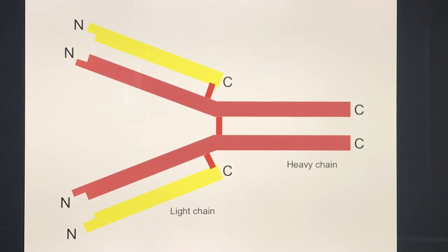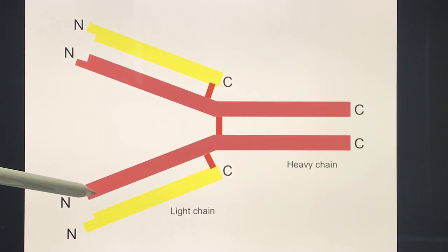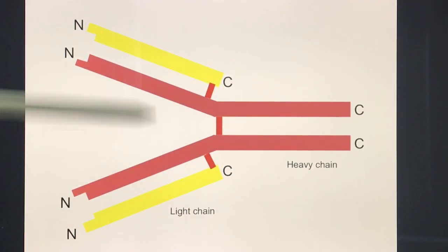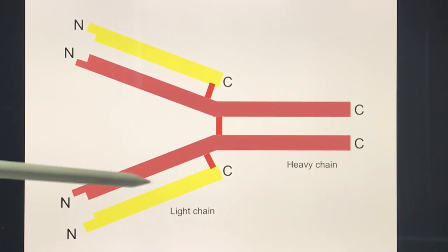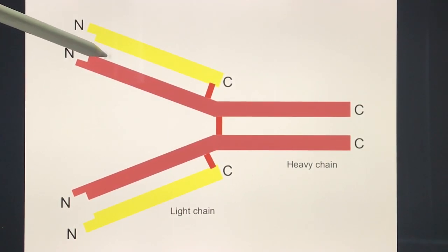Using color coding on the illustration: the yellow is the light chain on the outside, and what's inside — shaped like the letter Y — is your heavy chain. The N represents the amino terminus, and the C represents the carboxy terminus. So the basic structure has two light chains, two heavy chains, and two regions: the constant region with the carboxy terminus, and the variable region with the amino terminus.